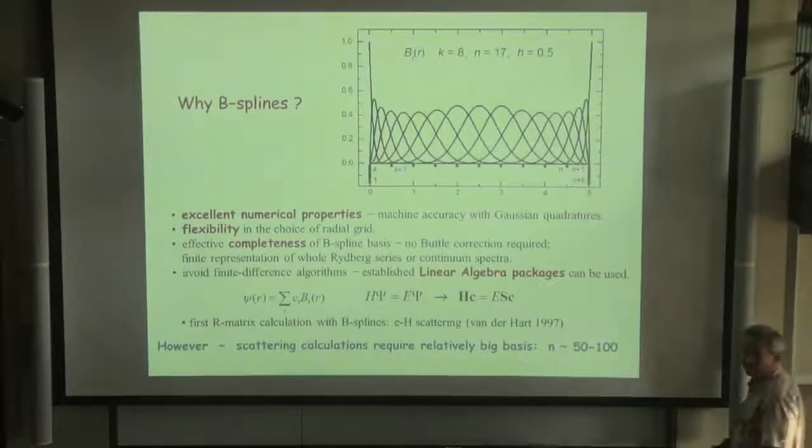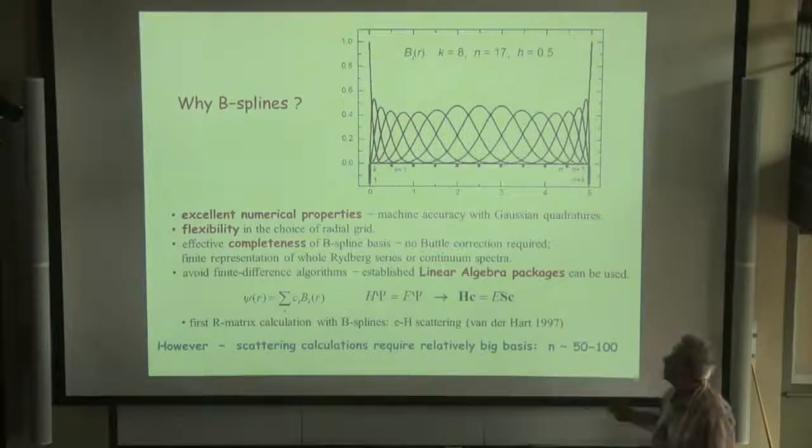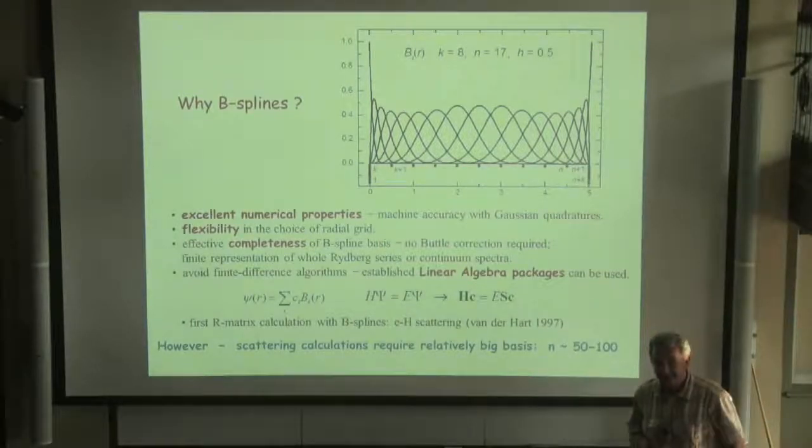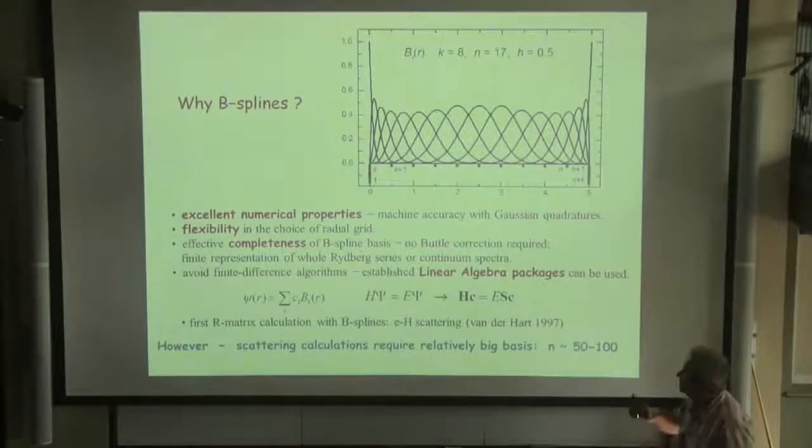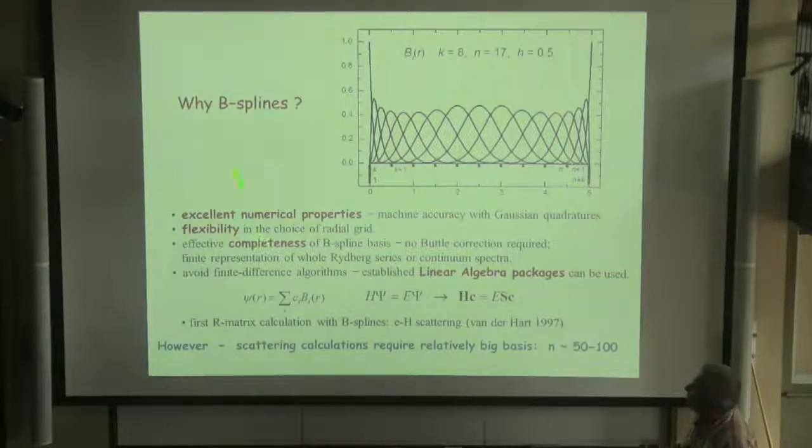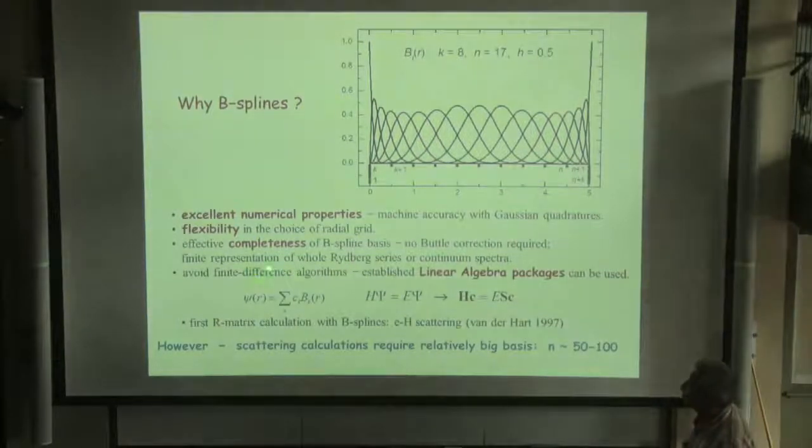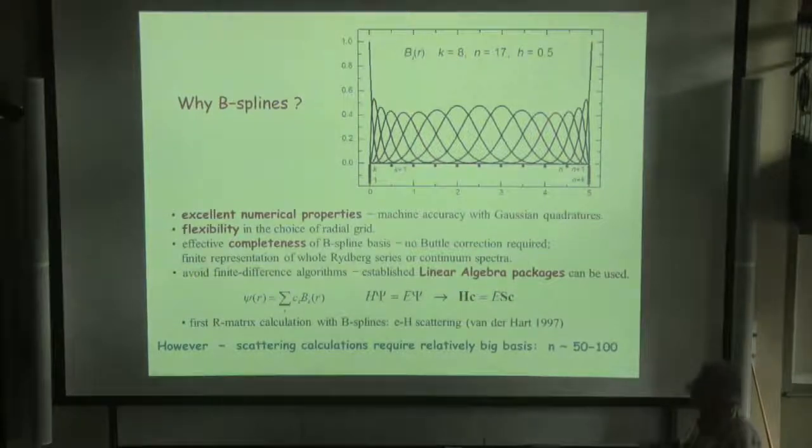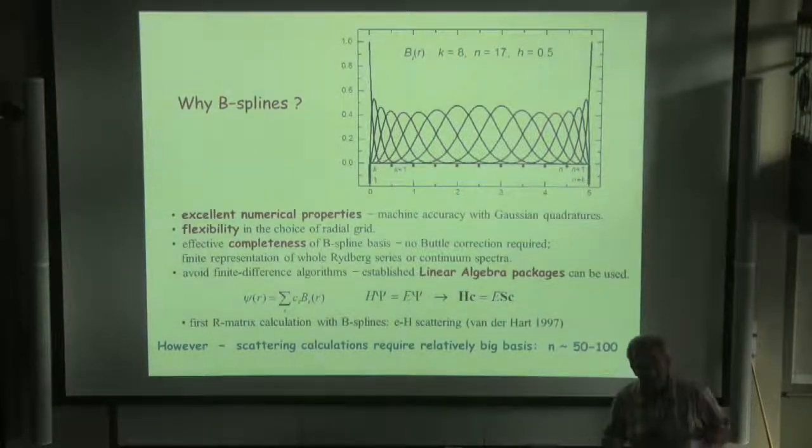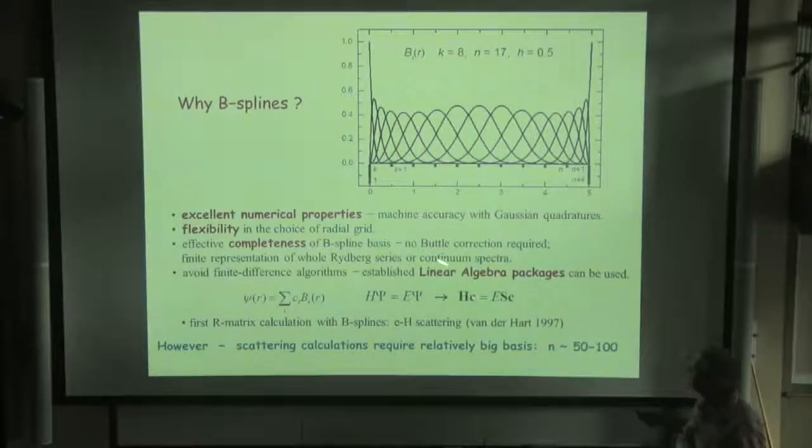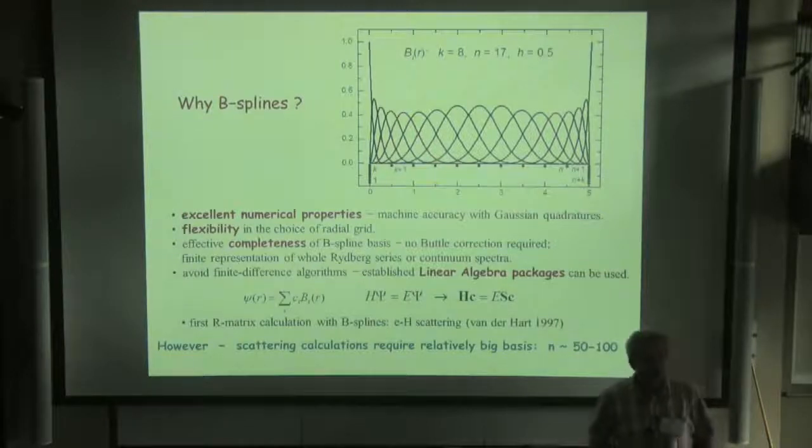Our feature is the B-spline R-matrix method. We use the B-splines as a universal basis for both bound and continuum orbitals. Now, B-splines are widely used in atomic structure. I just mention that we use them for excellent numerical properties and flexibility. And what's important here, B-splines are effectively complete bases, that we don't need additional correlations or corrections for matrix bases. Only one disadvantage: usually with B-splines bases, it's much bigger than in standard code applications.